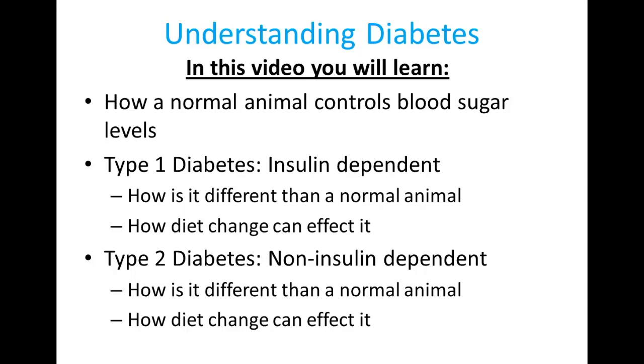In this video, Understanding Diabetes, you will learn how a normal animal controls their blood sugar levels, how a type 1 diabetic, which is considered insulin dependent, how it is different from the normal animal, and how diet change can affect their blood sugar levels, and then what is a type 2 diabetic, or non-insulin dependent, how is it different from a normal animal, and how diet change can affect it.